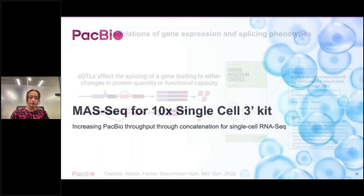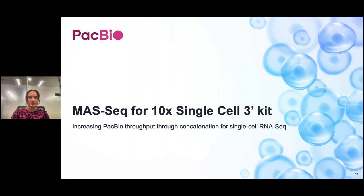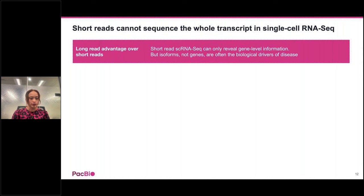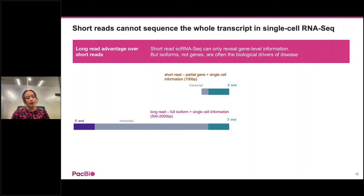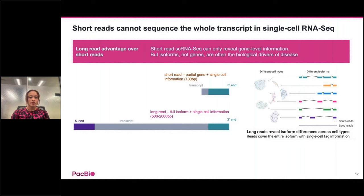Next, I'll talk about our on-market MaSeq for 10x single-cell 3-prime kit. With short reads, because single-cell tag information is only at one end of the molecule — typically the 3-prime end — short reads can only get partial gene information, typically 50 to 100 bases. In contrast, long reads can capture the entire full-length isoform with the single-cell tag information, enabling identification of cell type isoform specificity.